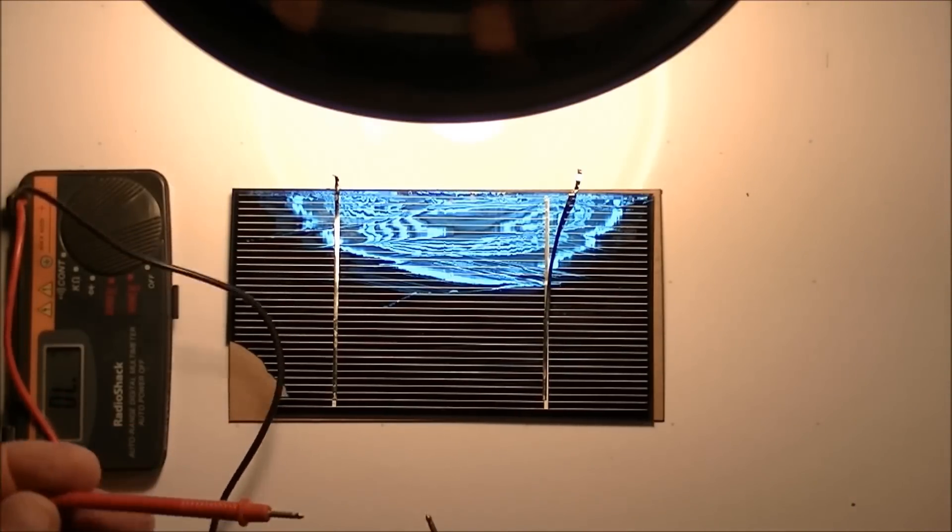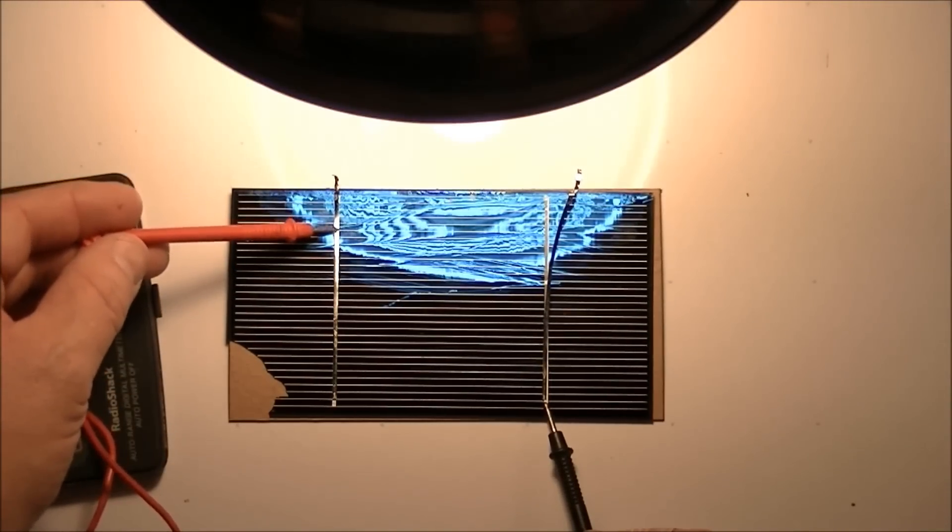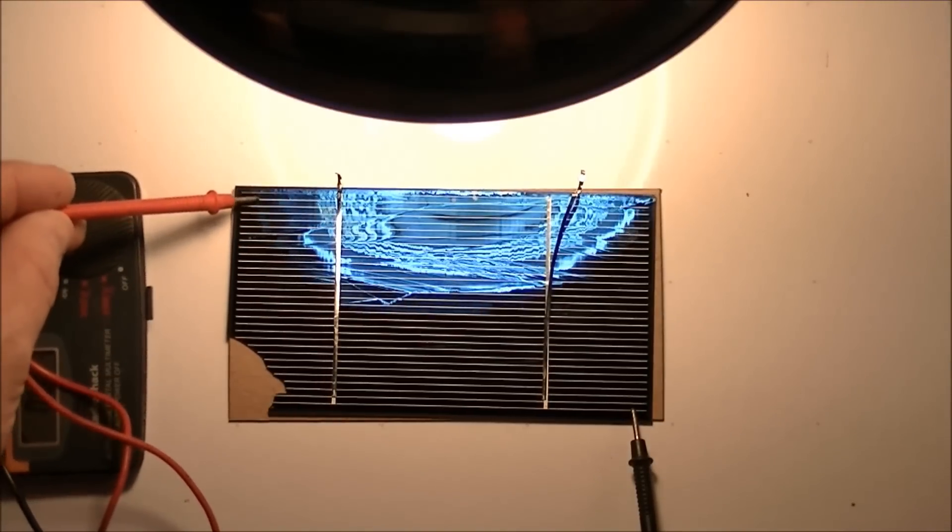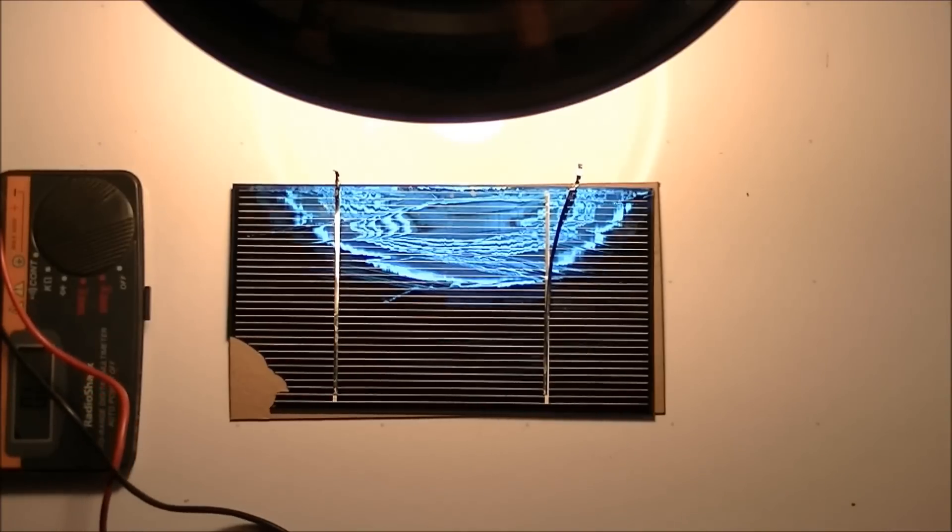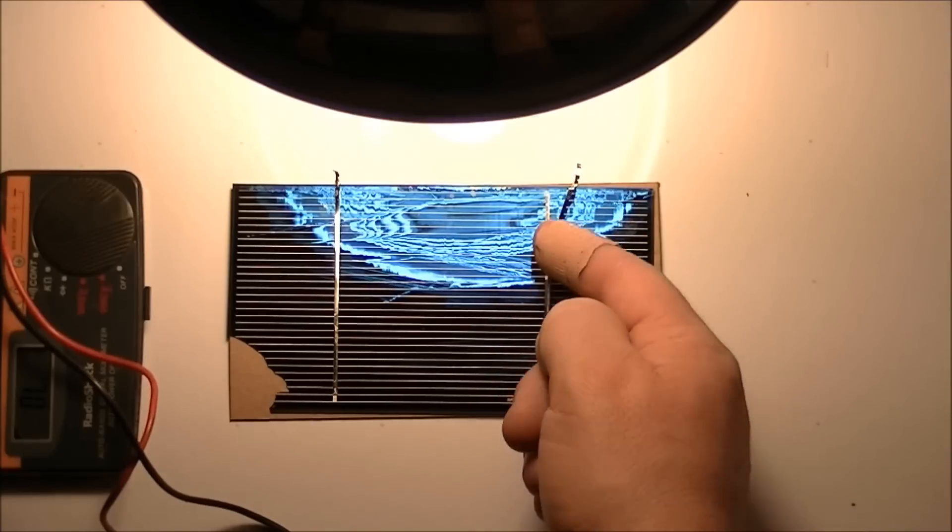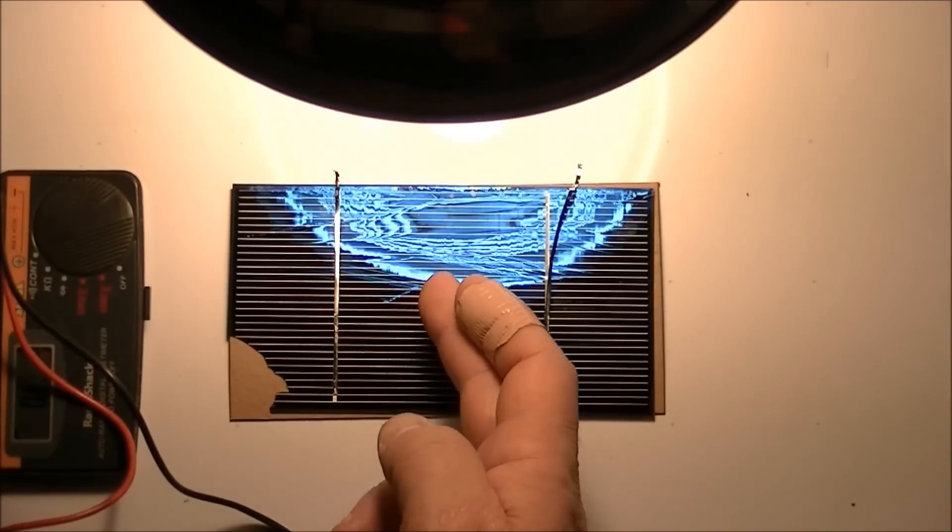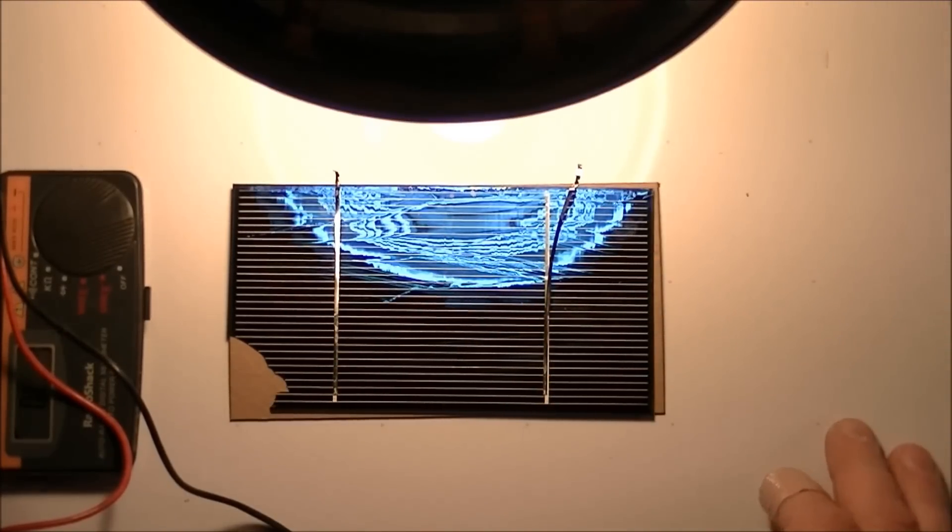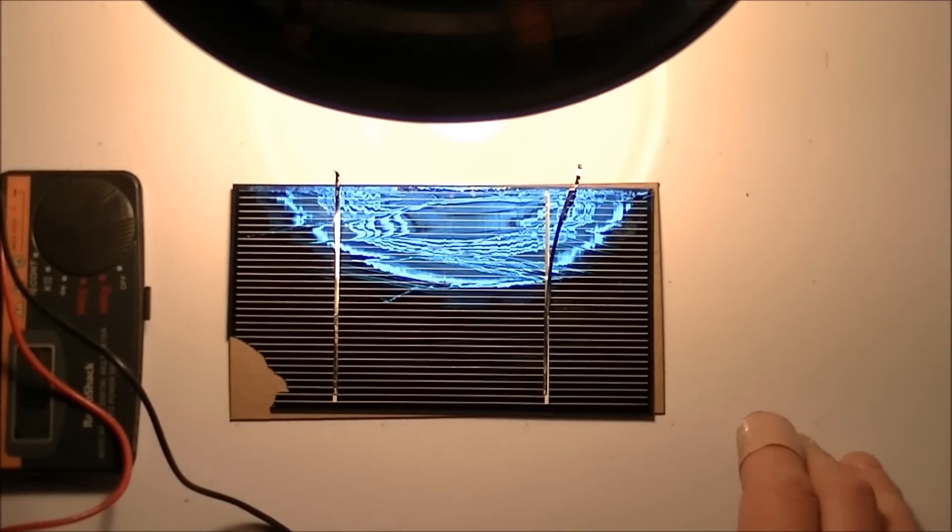First thing I'm going to do is test the continuity of this cell and show you how each side is its own circuit. I'm just going to take it from here to here - you see that's a closed circuit. I'm going to take it from the very edge here to the very edge here. There you go, it's a closed circuit there too.